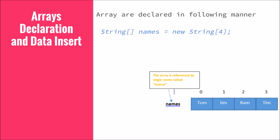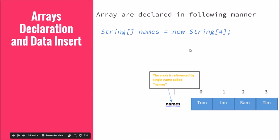The way you declare an array is: 'String[] names = new String[4]' — that means I want to declare an array of strings and I want to store four of them. Similarly for integers, you say 'int[] marks = new int[4]', meaning I want to store four int values called marks.